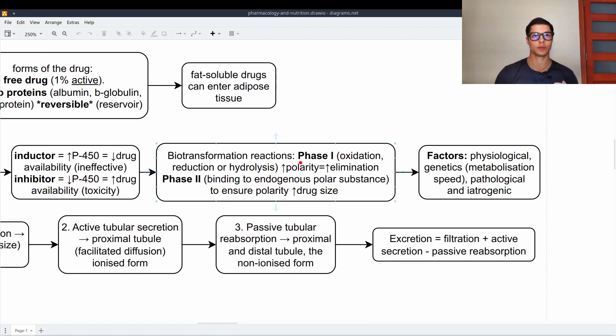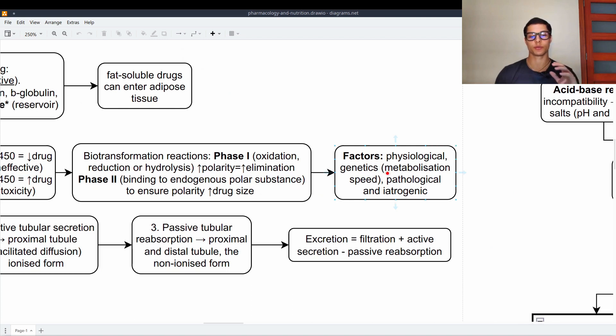Biotransformation reactions are the ones that will help us get rid of the drug to metabolize it properly. We have two phases. Phase one is oxidation, reduction or hydrolysis. We try to increase the polarity and therefore this will increase the elimination. Phase two is binding to endogenous polar substance. This will ensure the polarity because this substance is much bigger. Therefore, it will increase the drug size and this substance is already polar. Factors involved in these biotransformations are physiological, genetics, metabolization speed is genetic, pathological and iatrogenic as well.